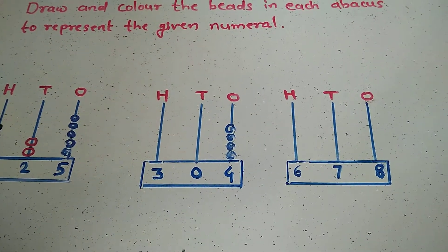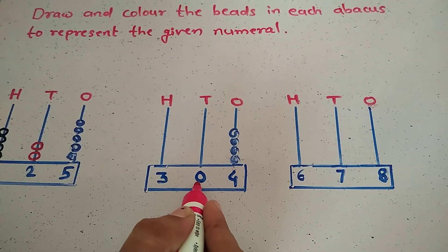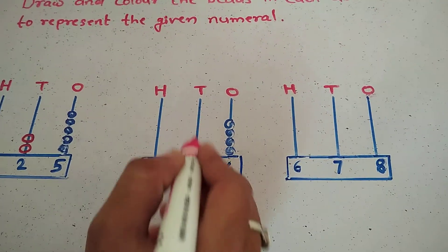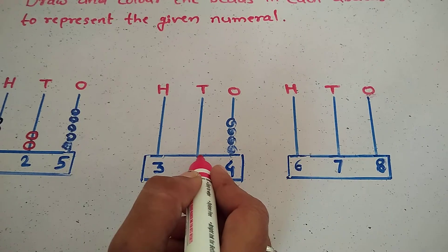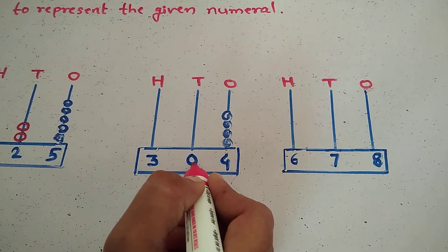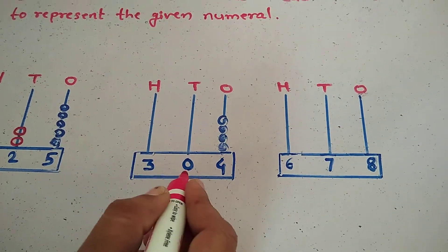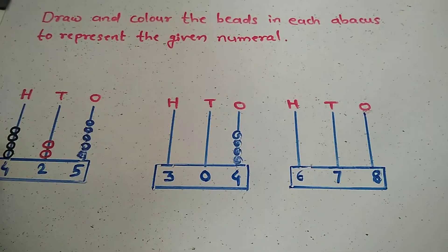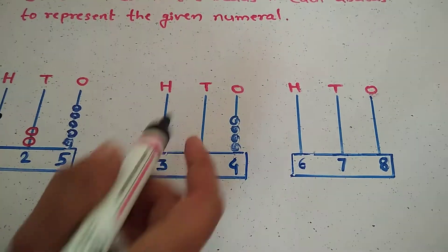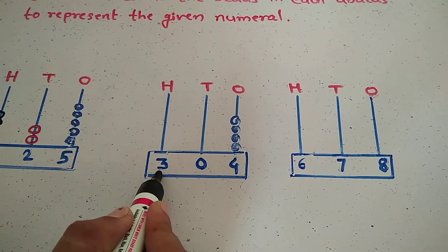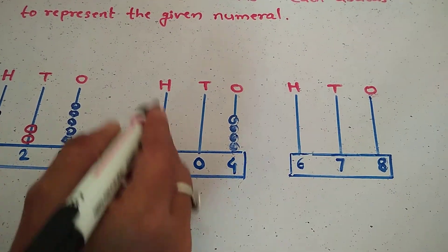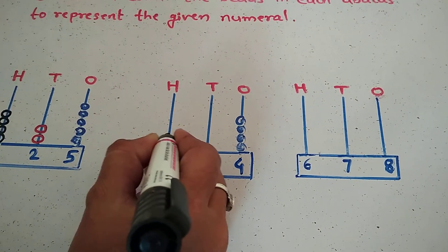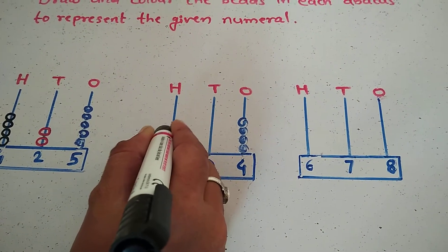Next, which number is in the tens place? Zero. Zero means how many beads are drawn there? Zero means no beads. Next, hundreds place. Which number is in the hundreds place? Three. Draw the beads — three: one, two, three.